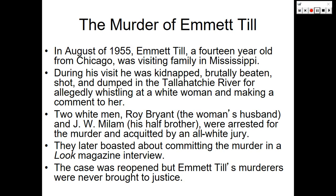The murder of Emmett Till. In August of 1955, Emmett Till, a 14-year-old boy from Chicago, was visiting family in Mississippi. During his visit, he was kidnapped, brutally beaten, shot, and dumped in the Tallahatchie River for allegedly whistling at a white woman and making a comment to her. Two white men — Roy Bryant, the woman's husband, and J.W. Millam, his half-brother — were arrested for the murder and later acquitted by an all-white jury. They later boasted about committing the murder in an interview with Look Magazine. The case was reopened, but Emmett Till's murderers were never brought to justice.